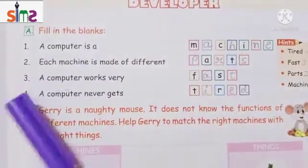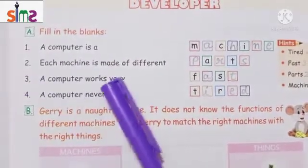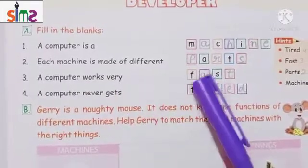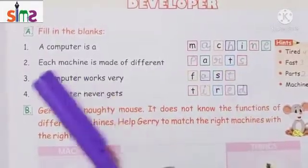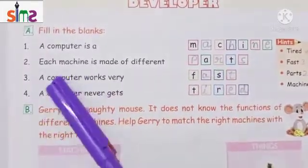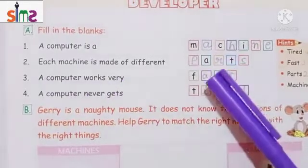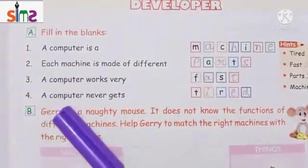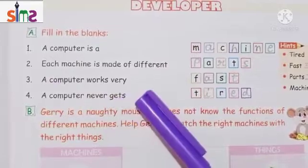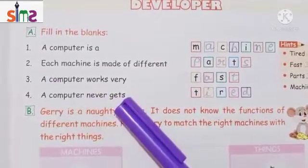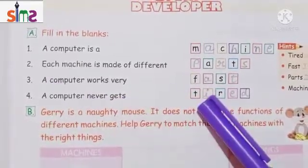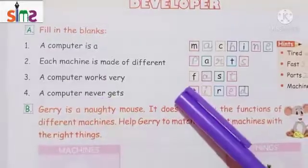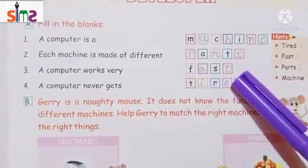The third fill-in-the-blank is: a computer works very fast. The answer is fast. So your third fill-in-the-blank is: a computer works very fast. Your fourth fill-in-the-blank is: a computer never gets... The answer is tired. A computer never gets tired.